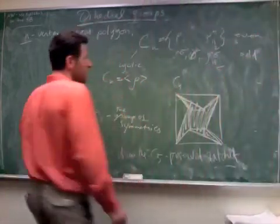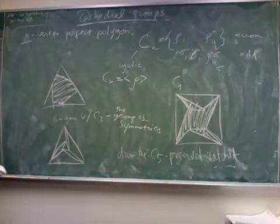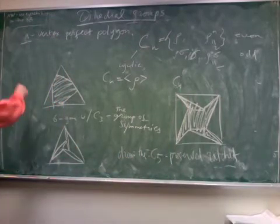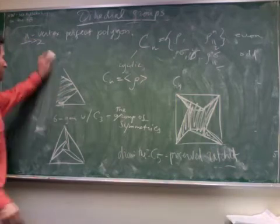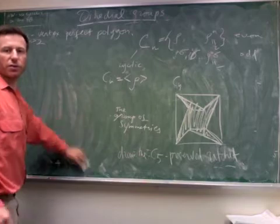Okay. Finally, so this was all for N bigger than 2. So what are D1, D2, C1, and C2?